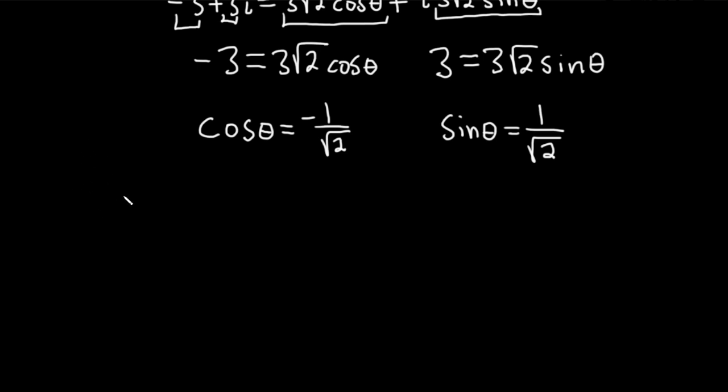So if you think about the unit circle, we know that whenever we have 1 over root 2, it's going to be some special multiple of pi over 4, one of the special angles. And on the unit circle, cosine is the x-coordinate and sine is the y-coordinate. So we're basically asking, when is x negative and y positive? Well, that's going to occur in quadrant 2. x is negative and y is positive.